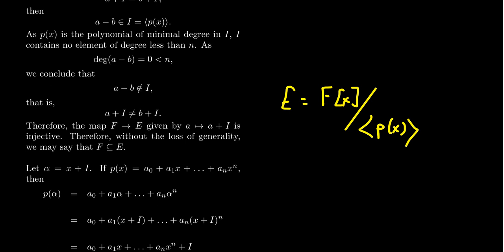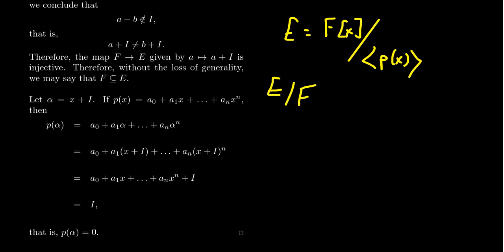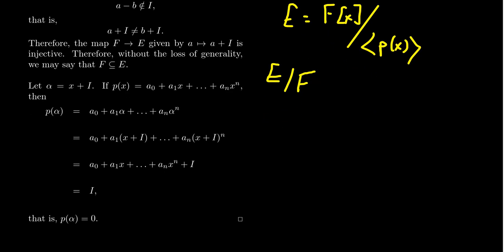So without loss of generality, we can say that F is a subset of E because there is an isomorphic copy of F inside E. So E is in fact an extension field — E extends the field F. That was the first thing we had to show. The second thing we have to show is that p(x) has a root in E. To do that, we take the element alpha to be the coset associated to the element x, that is x+I, and we call that element alpha.